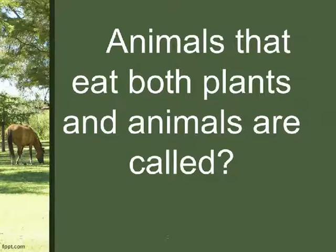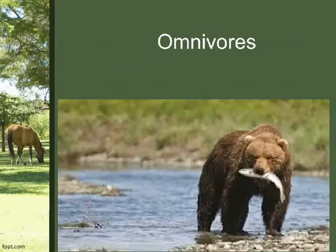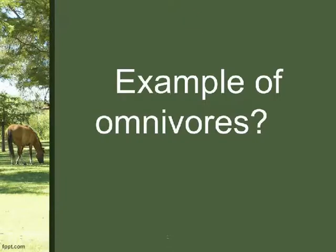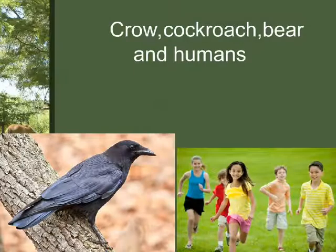Animals that eat both plants and animals are called omnivores. Examples of omnivores include crow, cockroach, bear, and humans.